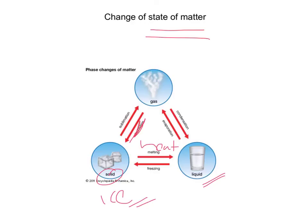It's basically changing from one state of matter to another. From a solid going into liquid, we call that melting. Liquid going into solid, we call that freezing. Going from a liquid to a gas, we call that evaporation. Going from a gas to a liquid, we call that condensation. And going from a solid to a gas, we call that sublimation. Just be aware of those terms.